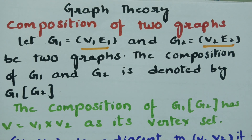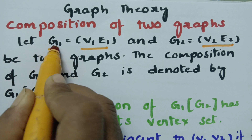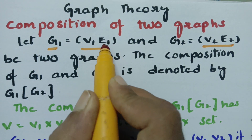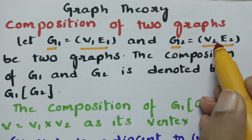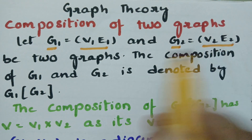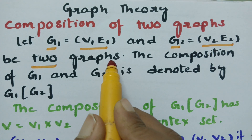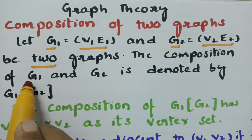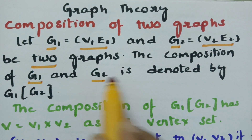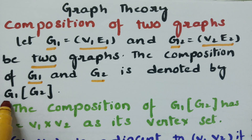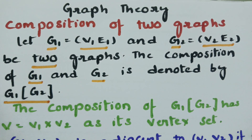Today's video is on composition of two graphs, and this topic is from graph theory. What is this composition of two graphs? Let us consider two graphs G1 = V1E1 and G2 = V2E2. The composition of G1 and G2 is denoted by G1 of G2.